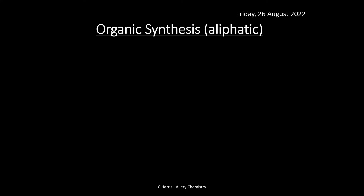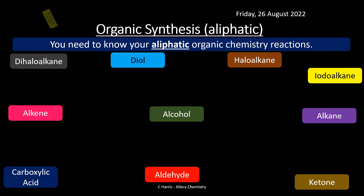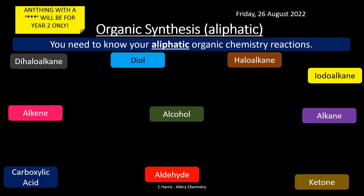These reactions are all what we call aliphatic — meaning they don't contain a benzene ring. In year two you'll be introduced to aromatics, which have a benzene ring. Anything with a triple star is year two only. What I'm going to do is bring up an arrow — pause the video when it appears, try to work out the reaction conditions, then unpause and check if you're right. This is a good way of summarising the material rather than just going through a series of reactions.